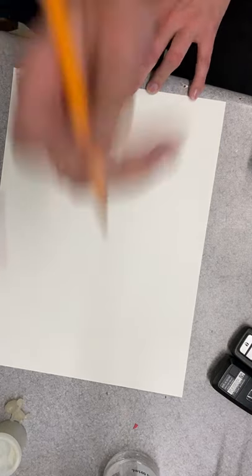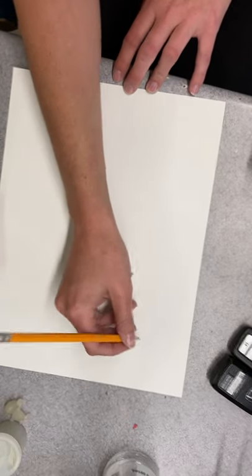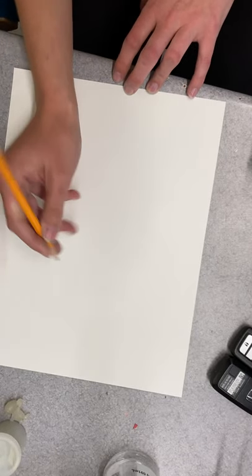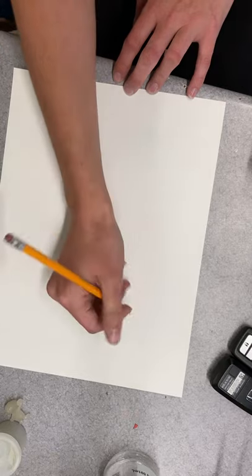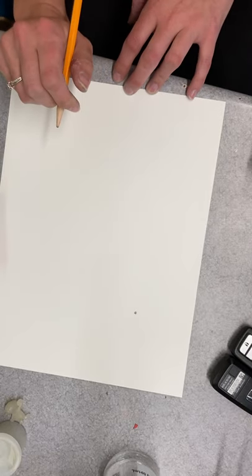all you have to do is start by making a dot on your paper somewhere. This can be in the corner, in the middle, wherever you want. I'm just going to go a little bit upper corner here.